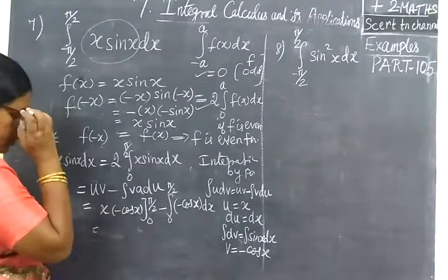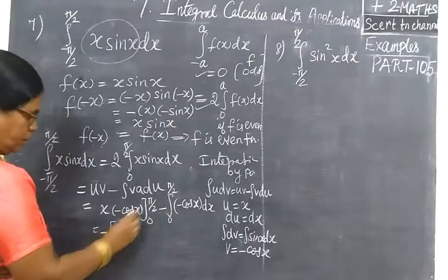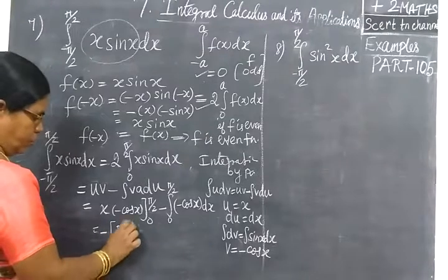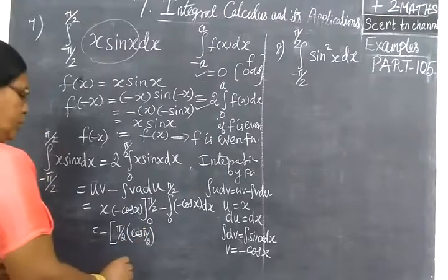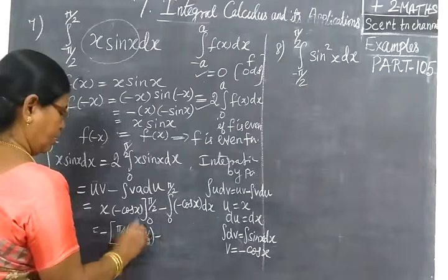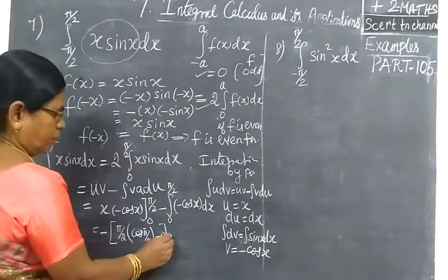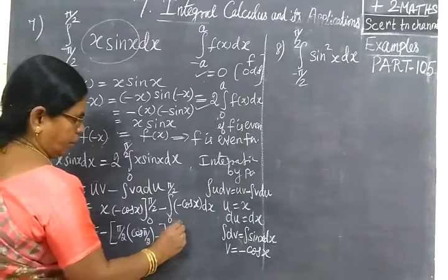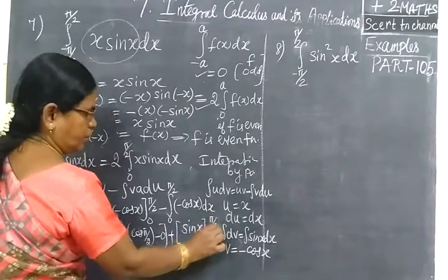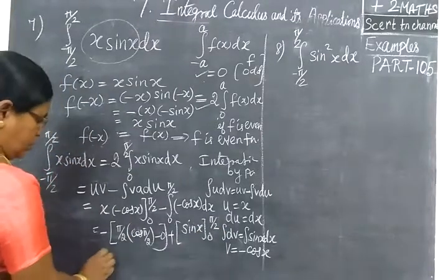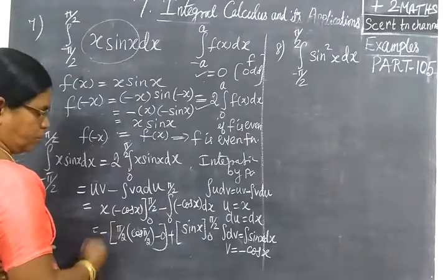Applying the limits: at the upper limit x equals 5π/2, cos(5π/2) equals 0, so that term vanishes. At the lower limit x equals 0, the term is also 0. So the first part is completely 0.